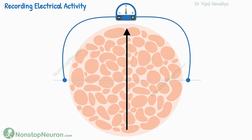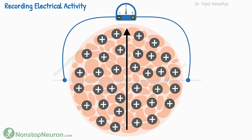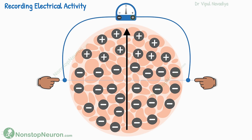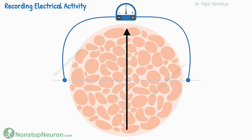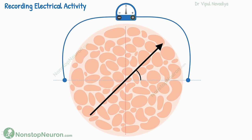If the current happens to be perfectly perpendicular to the electrodes, there won't be any recording at all. This is because both electrodes would be at the same potential all the time. As the depolarization travels perpendicular to the electrodes, both sides of tissue where electrodes are placed become electronegative at the same time — no potential difference, no recording. Similarly, repolarization also happens at the same time at both electrodes, producing no change. In short, the meter records only projections of currents that fall in the direction of the electrode placement; perpendicular components are missed.